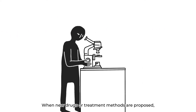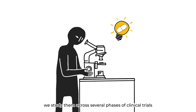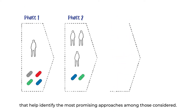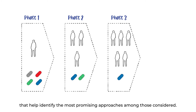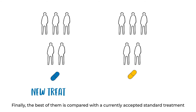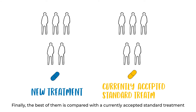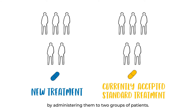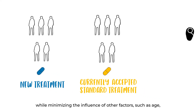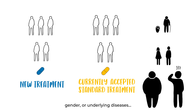When new drugs or treatment methods are proposed, we study them across several phases of clinical trials that help identify the most promising approaches among those considered. Finally, the best of them is compared with a currently accepted standard treatment by administering them in two groups of patients. These trials are designed so that this comparison is based on the treatment only, while minimising the influence of other factors such as age, gender, or underlying diseases.